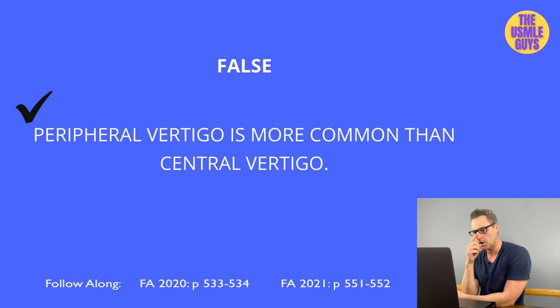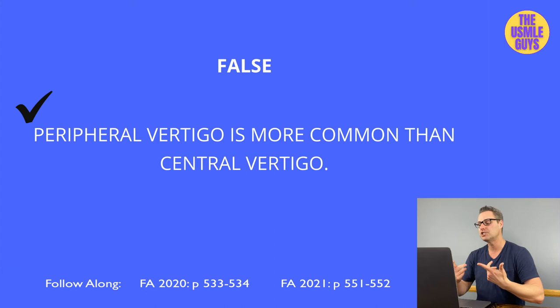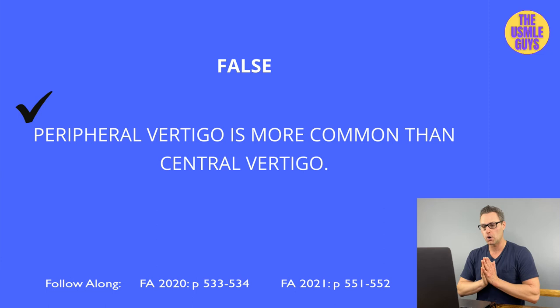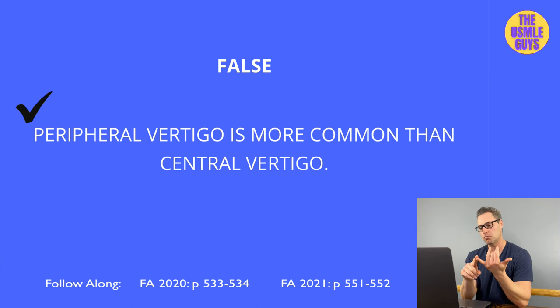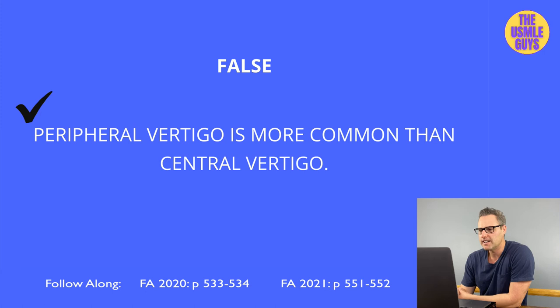This is false. Peripheral vertigo results from inner ear pathology; central vertigo results from a lesion in the brain stem or cerebellum. Meniere's disease — commonly tested — is characterized by a triad of sensorineural hearing loss, tinnitus, and vertigo. Central vertigo can result from neurologic disease, tumors, or stroke, with additional findings including nystagmus, diplopia, dysmetria, and vertical misalignment of the eyes.